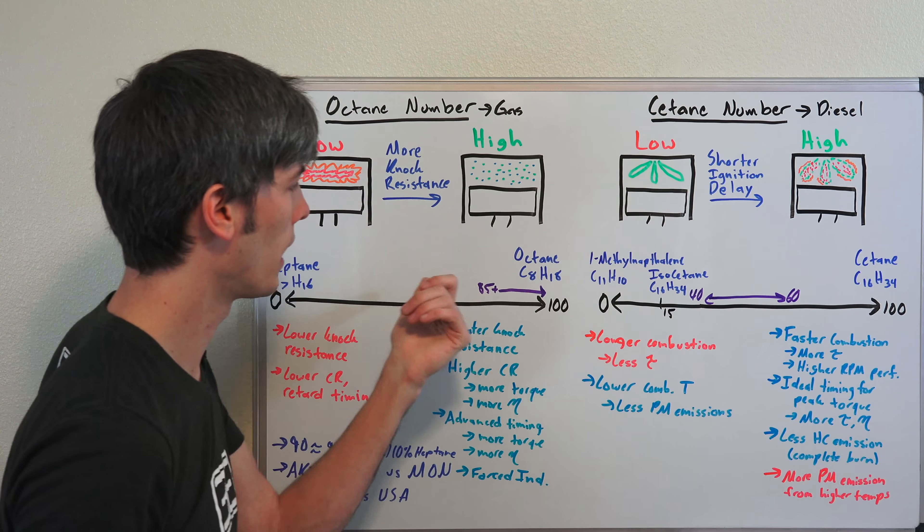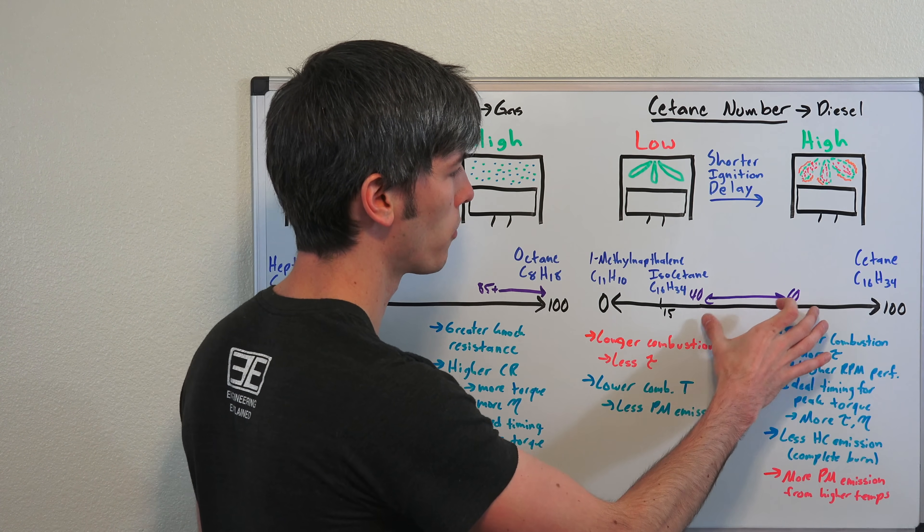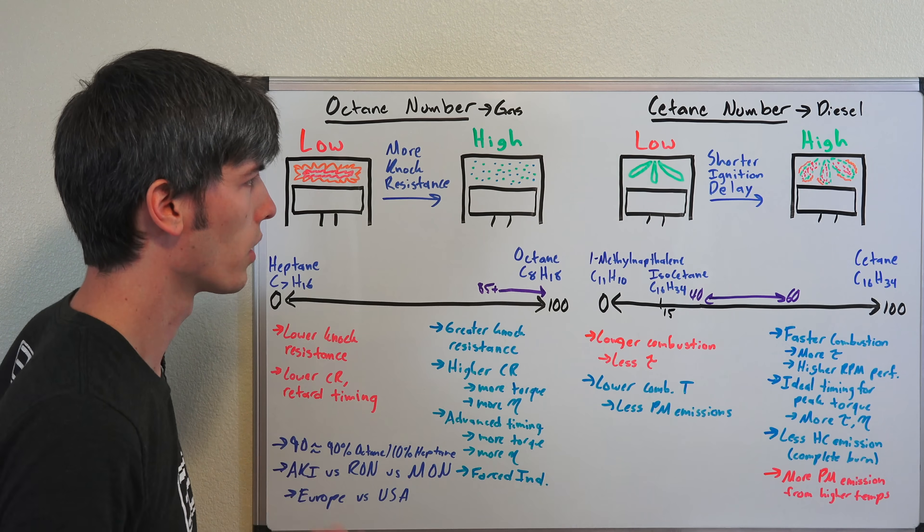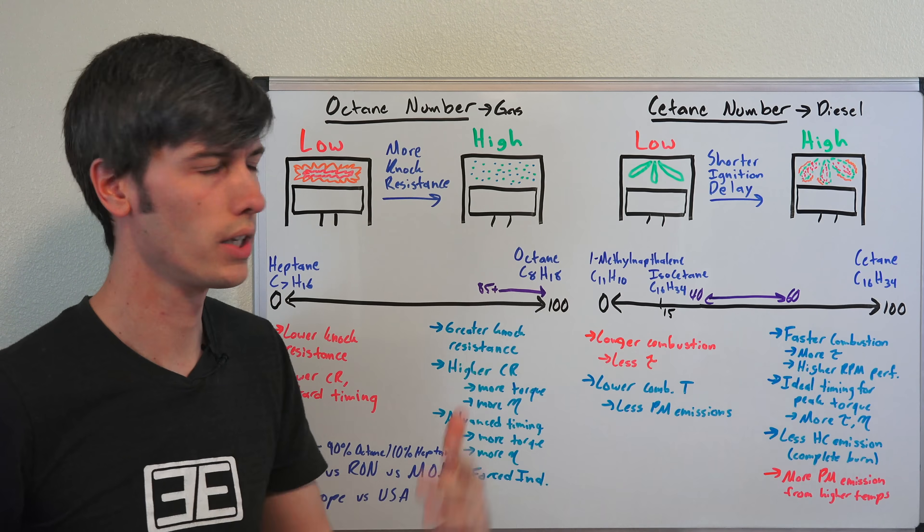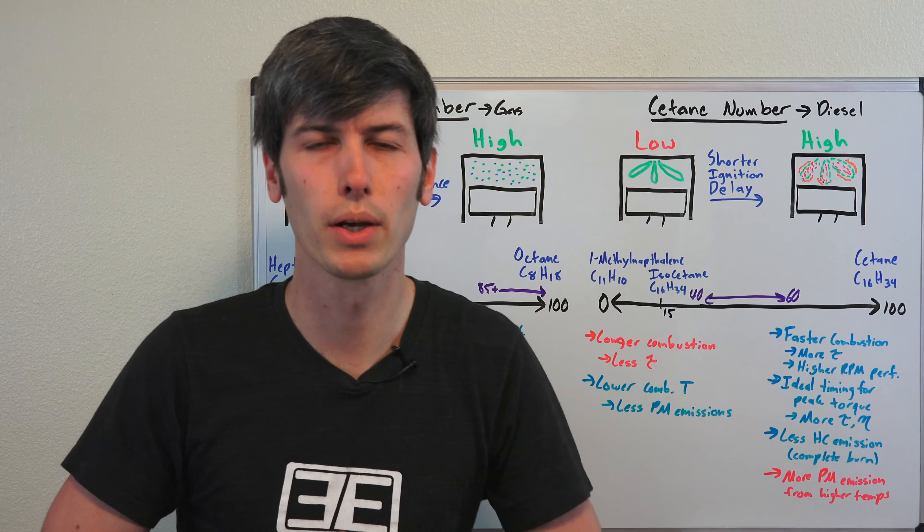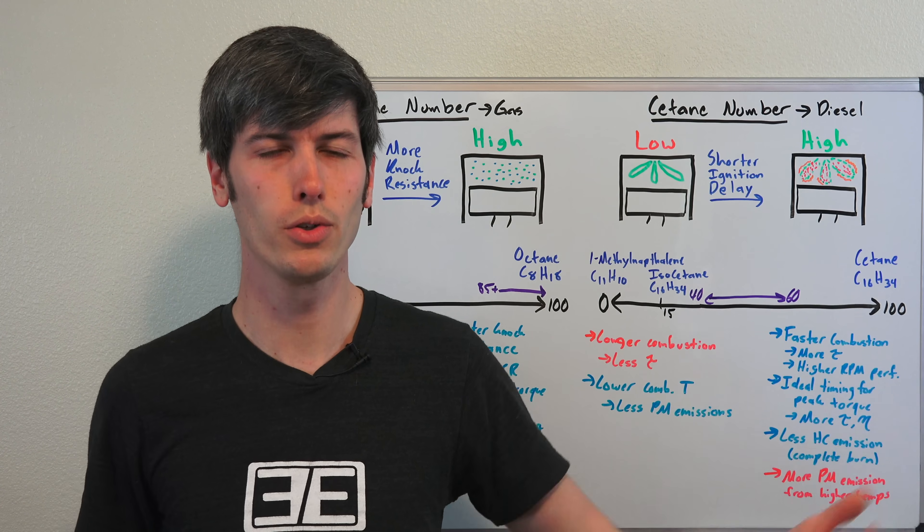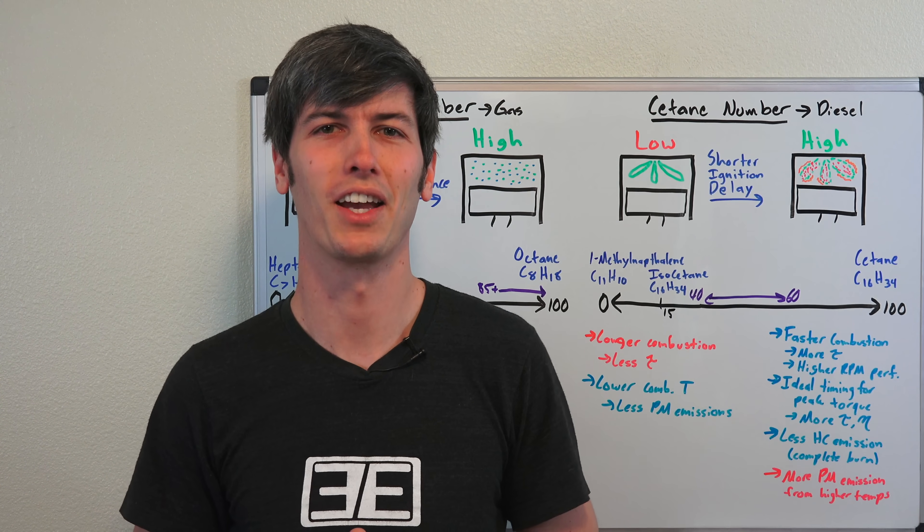You want to be on the higher end. In gasolines you tend to be 85 plus. Diesel numbers tend to be between about 40 and 60 for the cetane number. Hopefully this clears up the difference and what each of these two numbers mean when you're sitting at the pump and trying to fill up your car. I would just recommend going with whatever the manufacturer of your car recommends you use. If you guys have any questions or comments, please feel free to leave those below. Thanks for watching.